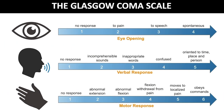The Glasgow Coma Scale is used to assess the level of consciousness for coma prognosis. The scale grades coma severity using eye-opening, verbal, and motor response. Whenever possible, the scale should be administered prior to intubation, sedation, or interventions that may influence grading.